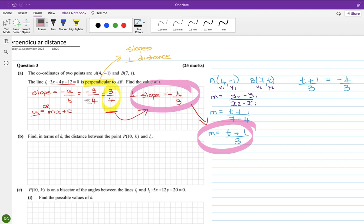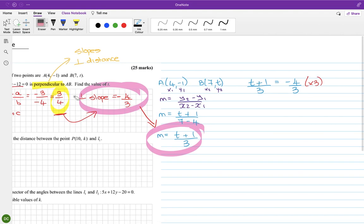Yeah, so I think we can multiply across by 3 because they're both 3s. So multiplying here by 3 will cancel that one and multiplying here by 3 will cancel that one. So I get t + 1 equals minus 4, and then minus the 1, so t equals minus 5 is what I'm getting there.